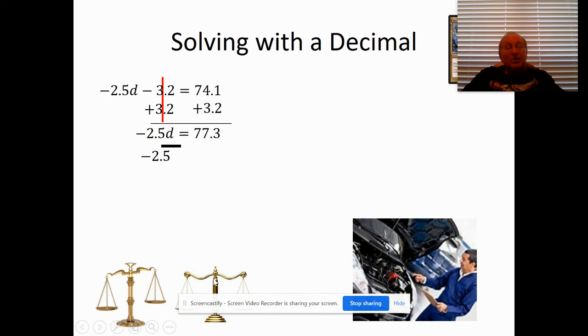But because I do it to one side, I have to do it to the other, otherwise my scales aren't balanced. So divide 77.3 by negative 2.5, and d will be negative 30.92. Thank you to our mechanic for our help.